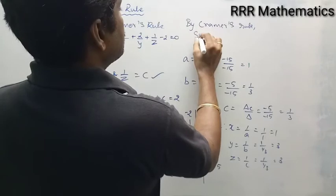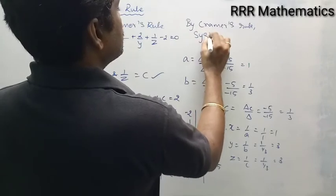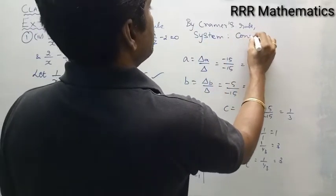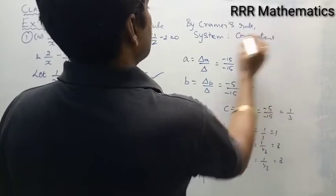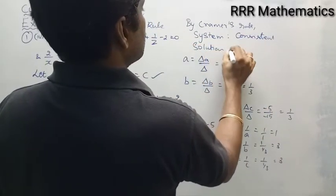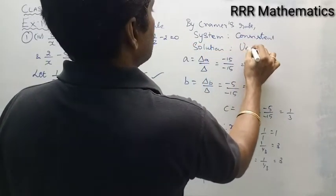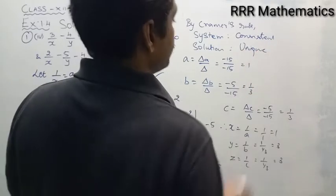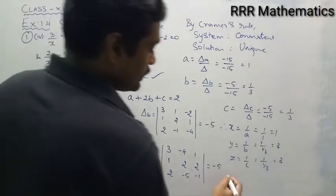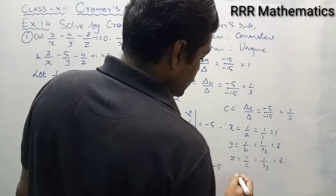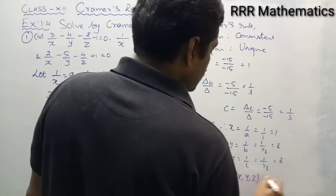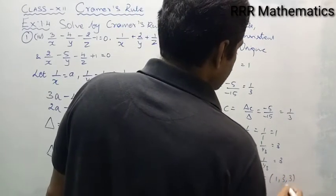In this case, the system is consistent and the solution is unique. So I got the values of x, y, z. The final solution is x = 1, y = 3, z = 3.